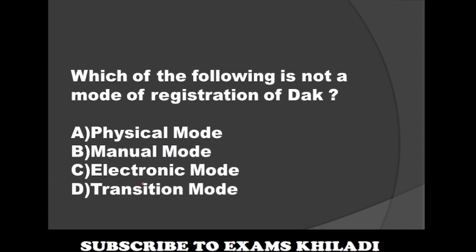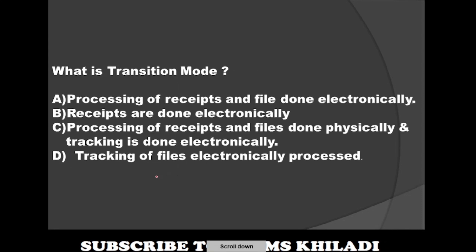Question: Which of the following is NOT a mode of registration of DAC? Option A: Physical mode. Option B: Manual mode. Option C: Electronic mode. Option D: Transition mode. The correct answer is Manual mode. Next question: What is Transition mode? The correct answer is Option C — processing of receipts and files done physically, and tracking is done electronically.